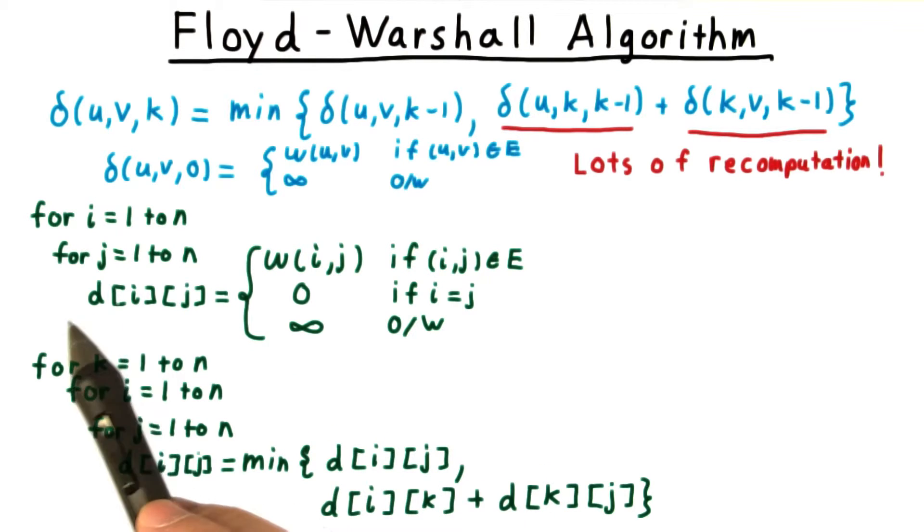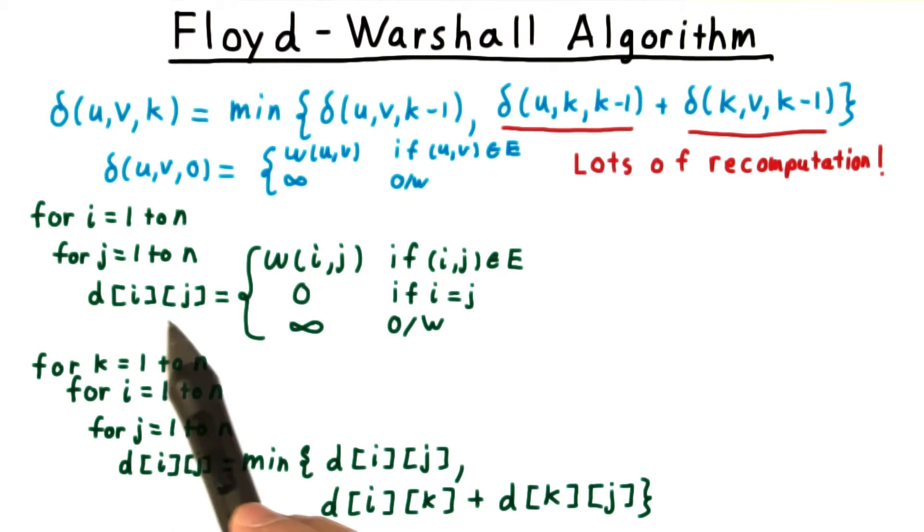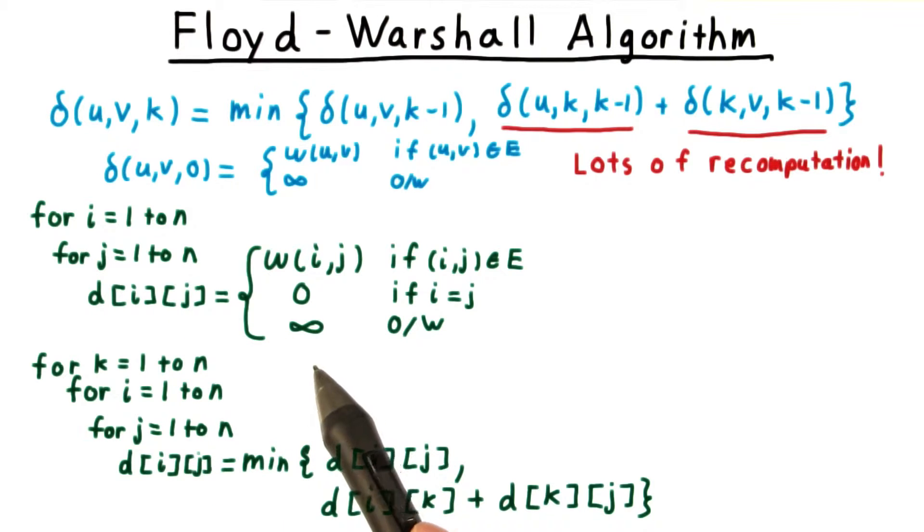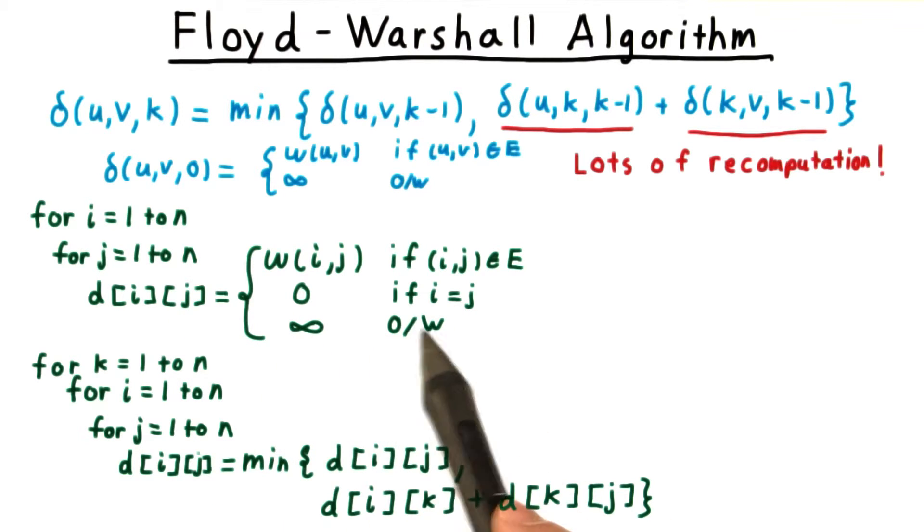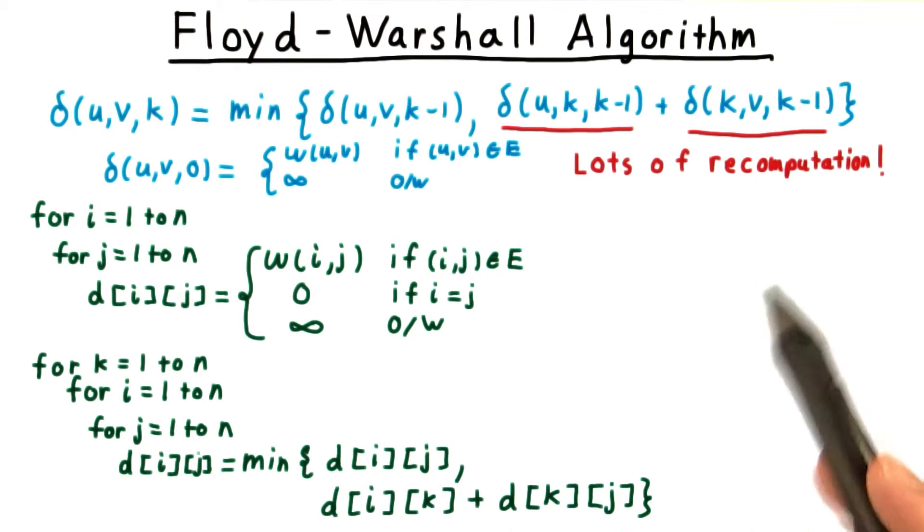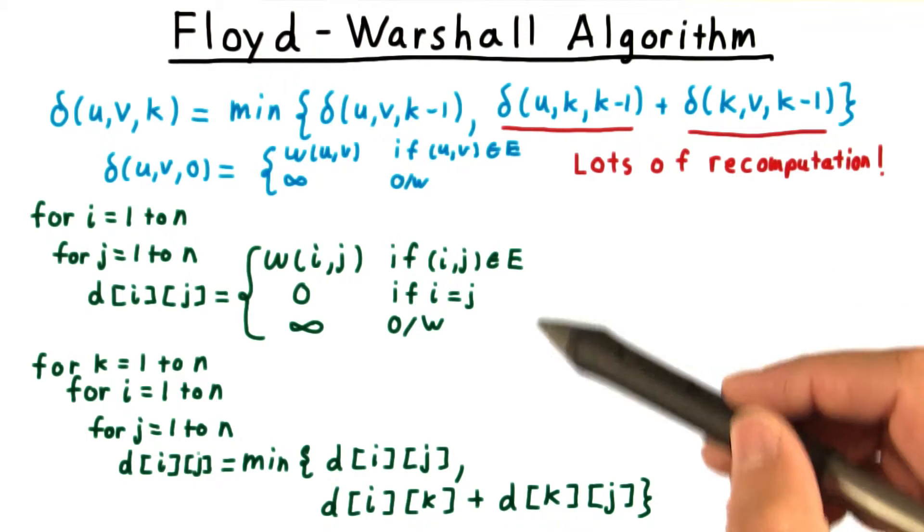We create a two-dimensional table d indexed by the source and destination vertices of the path. We initialize it for k equals 0, where there are no vertices allowed, just based on the edges.